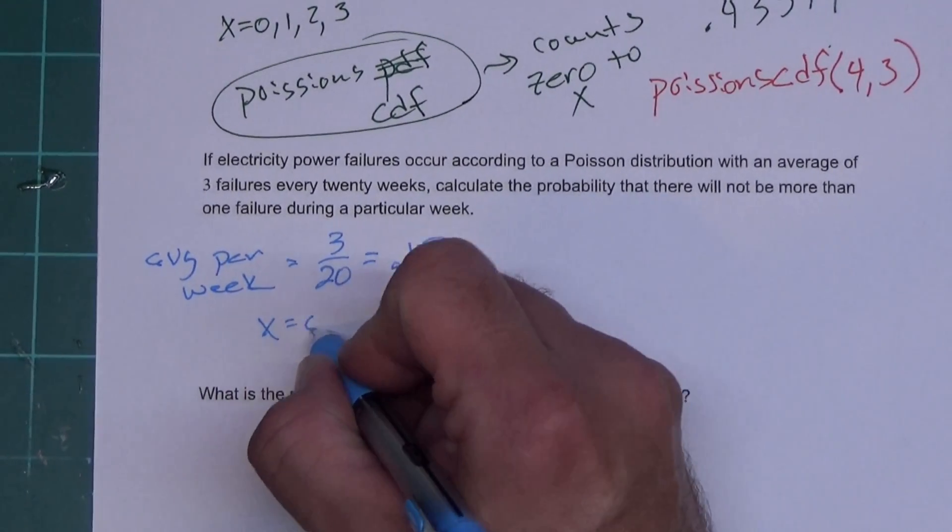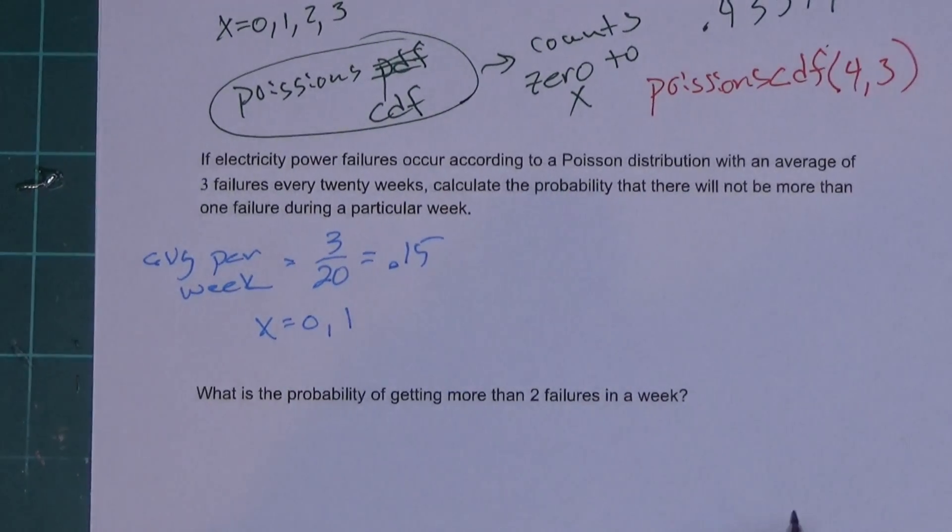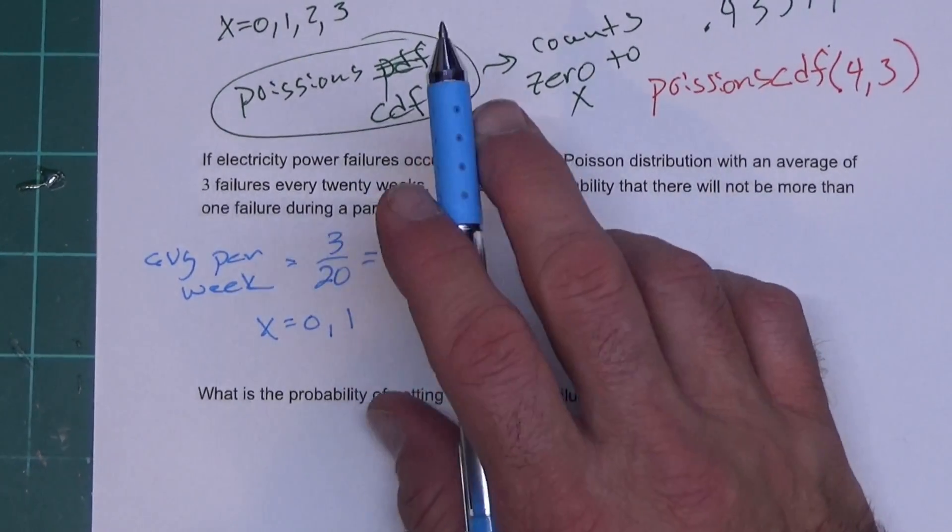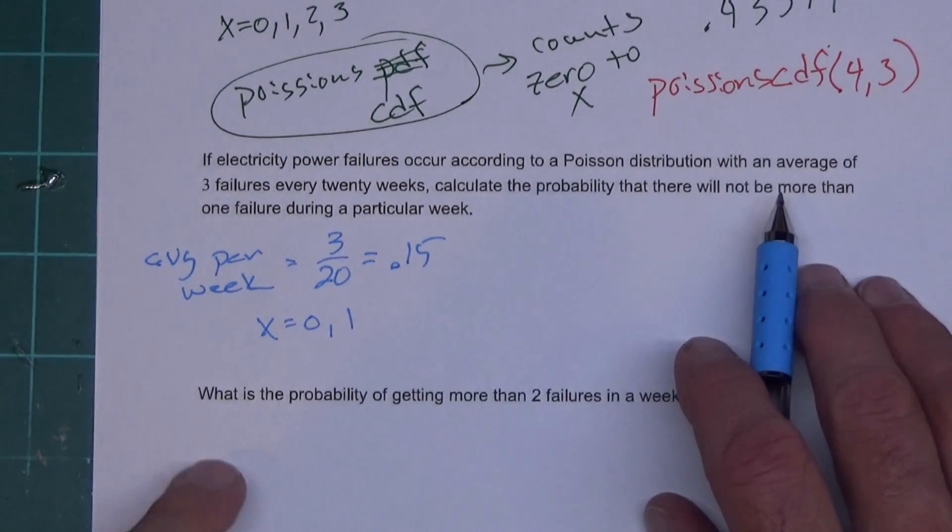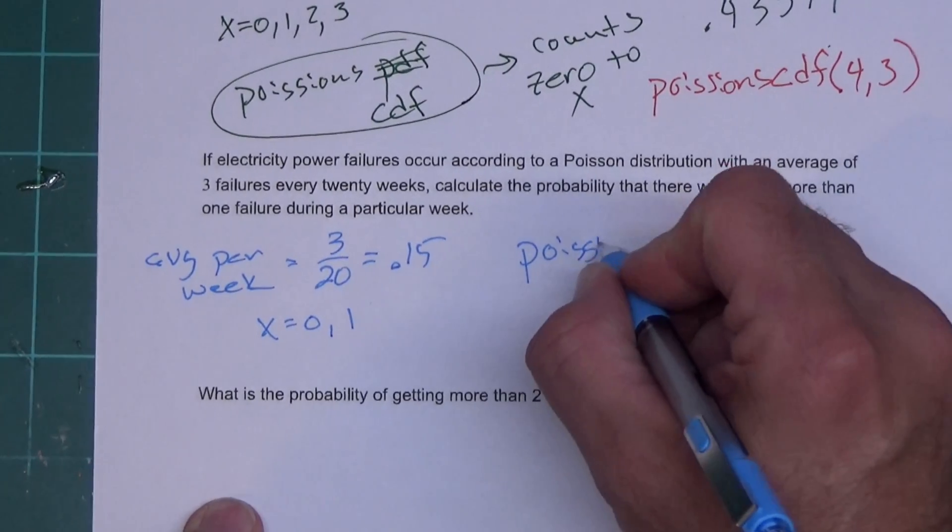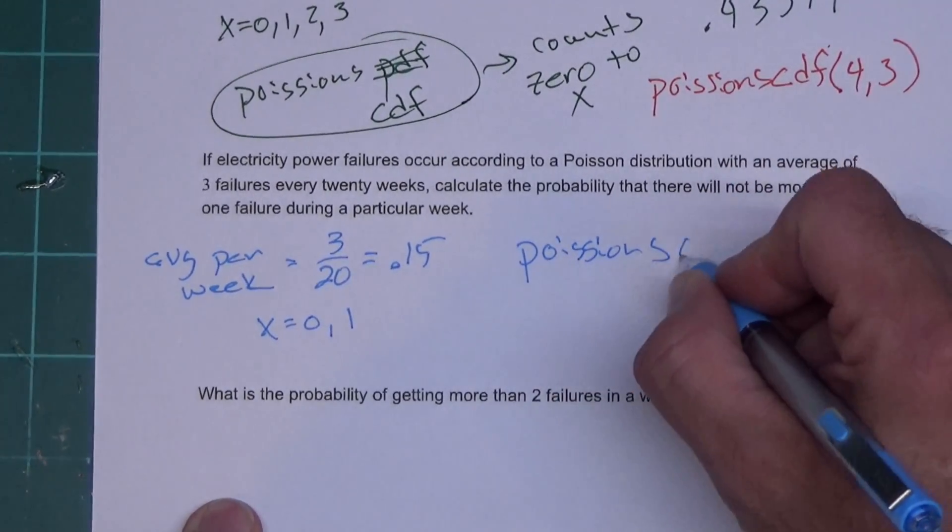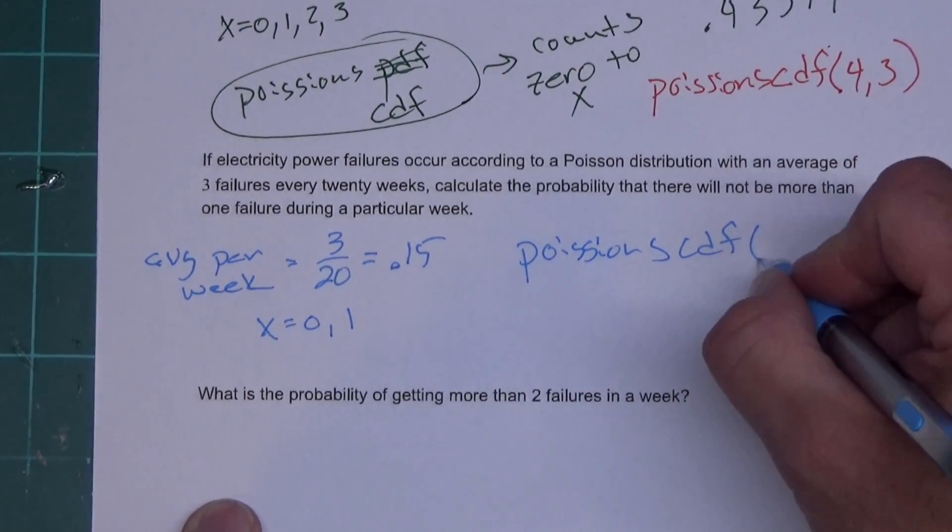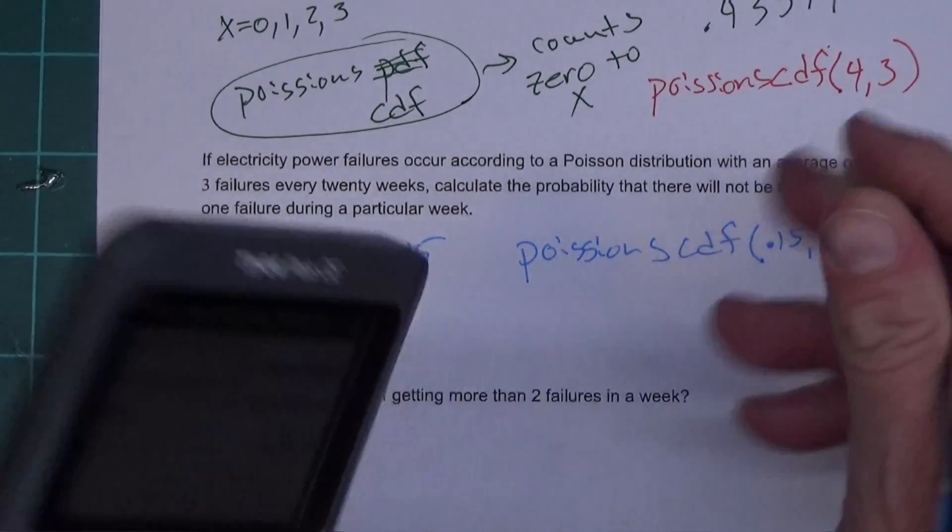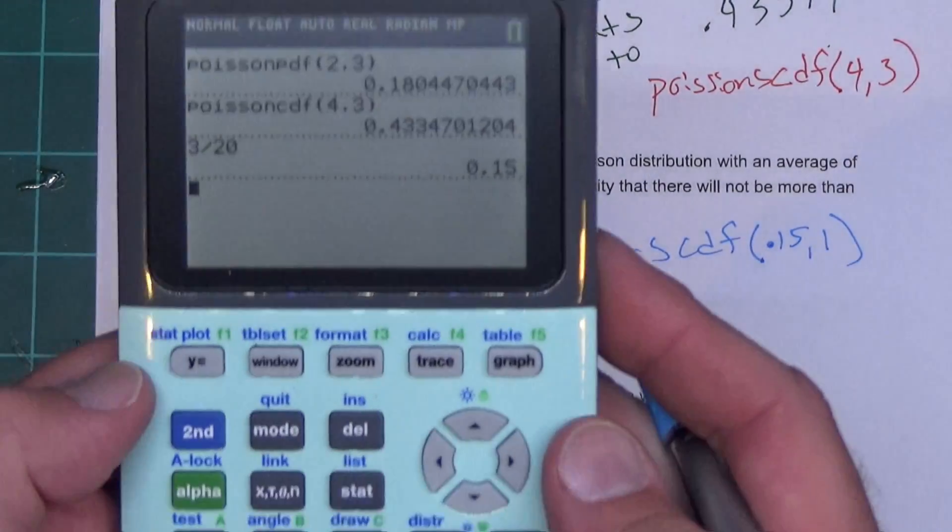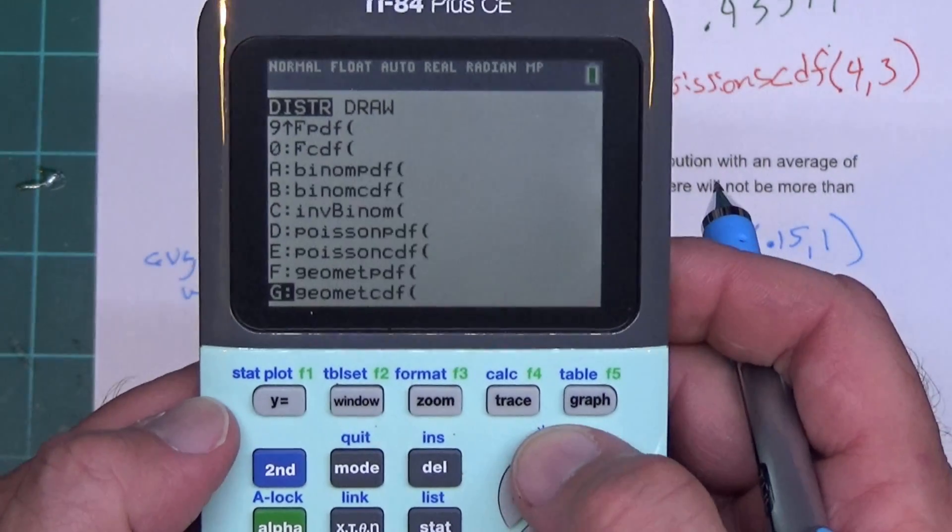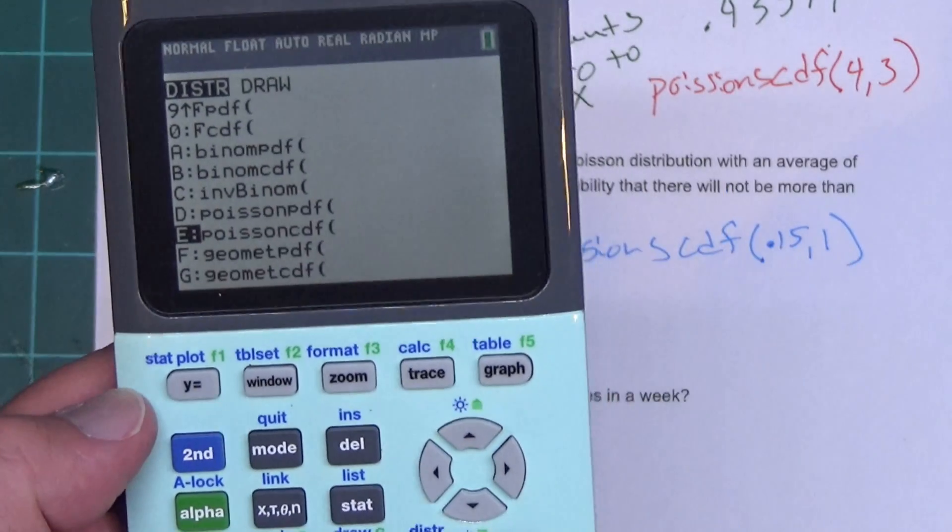And it says no more than one. No more than one means I can't go over one, so my X value is zero and one. Now that corresponds to what CDF does, so I get to just straight up use CDF, no worries about it. So I'm going to do Poisson's CDF.